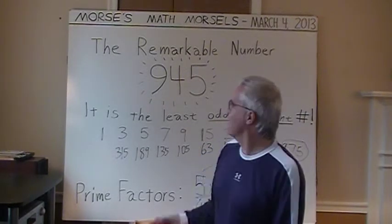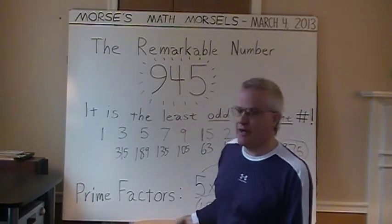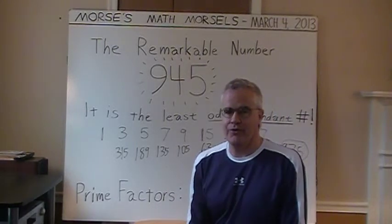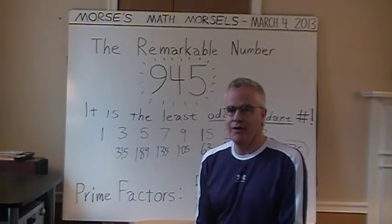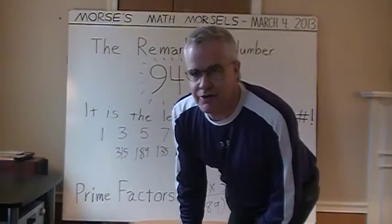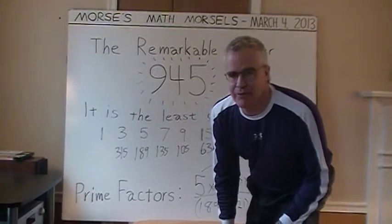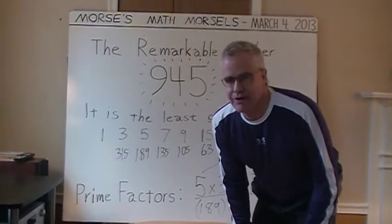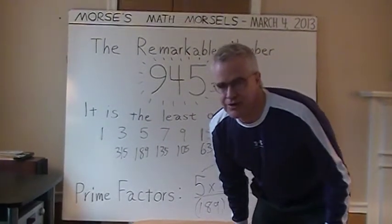So there you have it: 945, the first, the least positive, whole, odd, abundant number. Thanks for viewing.